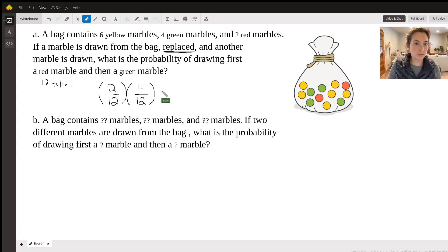And then all I do is multiply these probabilities together. So when I multiply fraction probabilities, I'm going to multiply straight across. Two times four, my numerators together give me eight, and my denominators 12 and 12 give me 144.